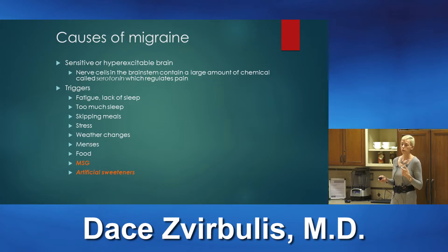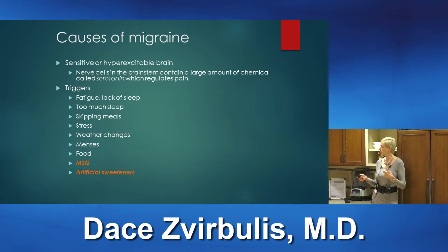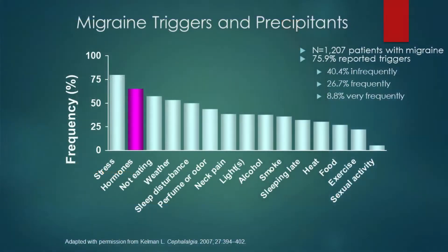Triggers include fatigue, lack of sleep, too much sleep, napping during the day, skipping meals, stress, weather changes, menses, certain foods, MSG, and artificial sweeteners. The most common trigger is stress, followed by hormones — women tend to have more migraines around menstruation, usually one to two days before the period. This is followed by skipping meals, weather changes, sleep disturbances, and other factors.